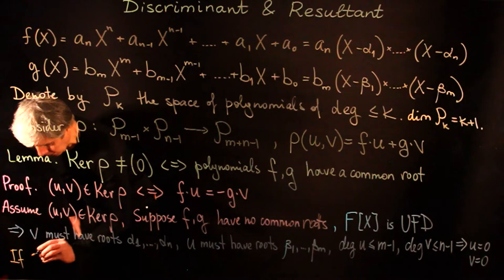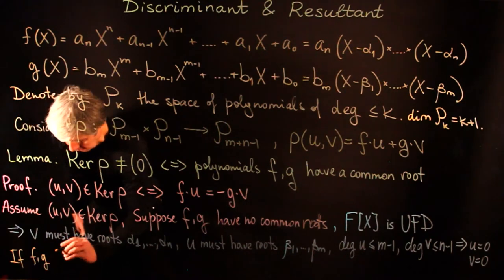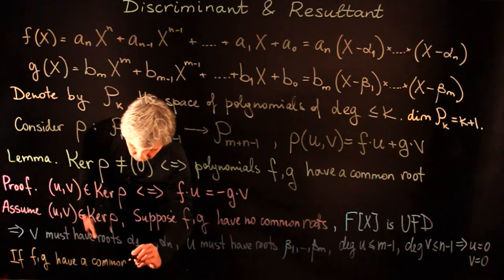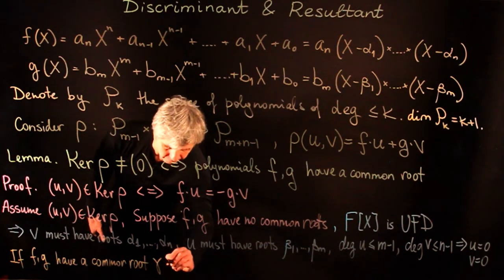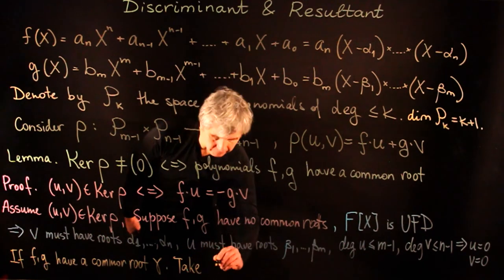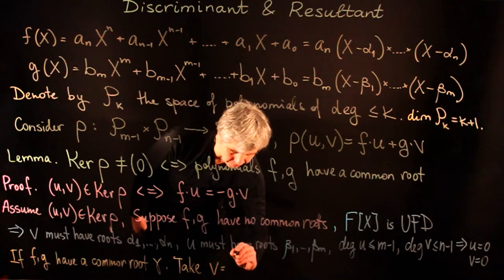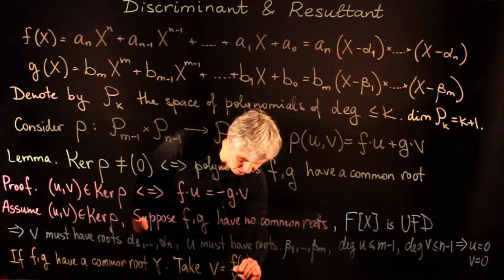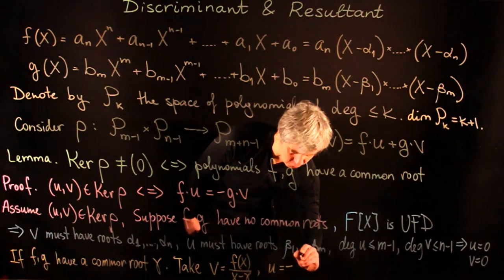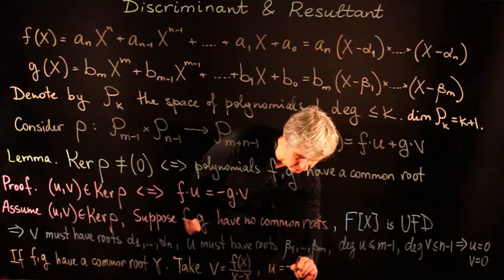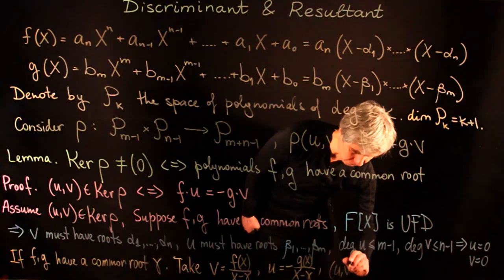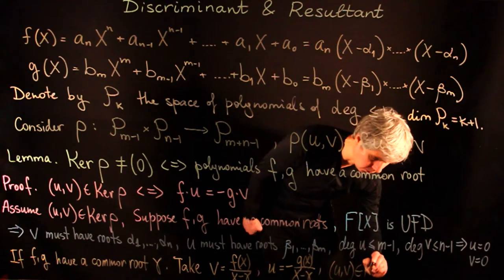Conversely, if f and g have a common root γ, we take v = f(x)/(x − γ) and u = −g(x)/(x − γ). In this way we construct a non-trivial element in the kernel of ρ.